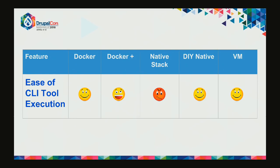Scorecard for ease of CLI tool execution: Docker is pretty good - you can run a command in a Docker container with one line. Docker Plus is awesome because you can encapsulate configuration for CLI tools within the abstracted configuration file, like Drush configurations in Lando. Native stack like MAMP is horrible because it breaks your process - you have an easy double-click install but then have to separately install command line tools with version management. DIY native with Brew on macOS is okay but no encapsulation. VMs are similar.